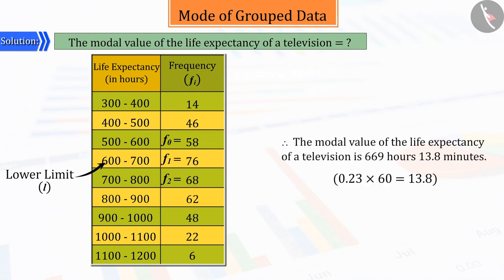Therefore, we can say that the life expectancy of the television set is 669 hours and 13.8 minutes.